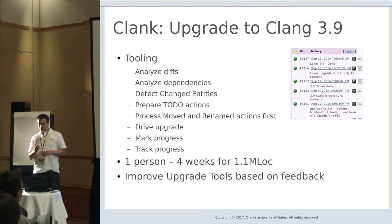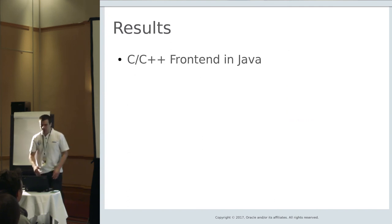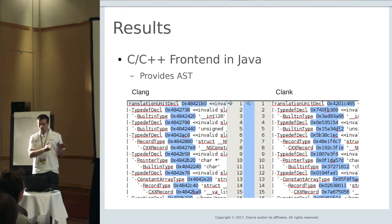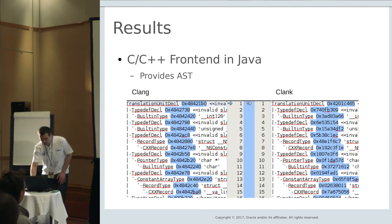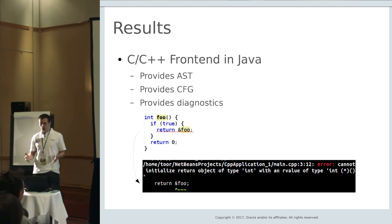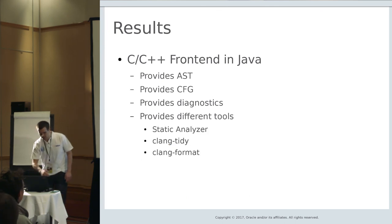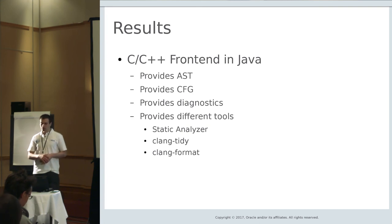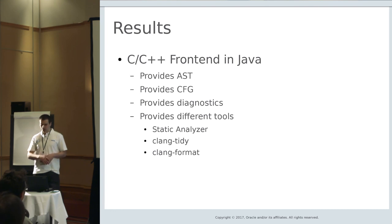The outcome is as follows. We have a C++ frontend in Java which provides us with an AST. On the left you can see the AST built by the native tool and on the right the AST built by our tool — the only differences are in hash codes. It also provides a control flow graph for advanced checks, and diagnostics such as errors and warnings. Additionally, there are many tools in the LLVM project built on top of Clang that we can now port, and in fact we are doing that so we can incorporate them into NetBeans as well.